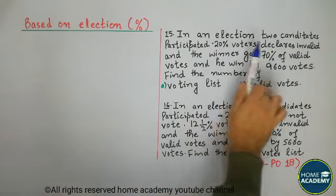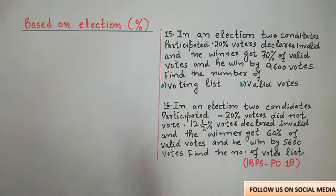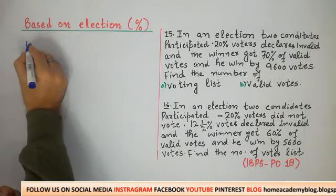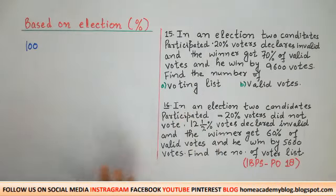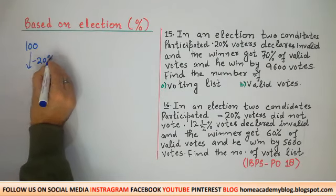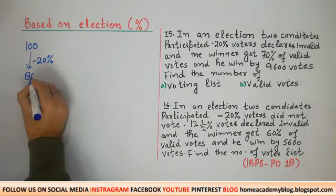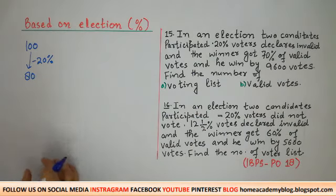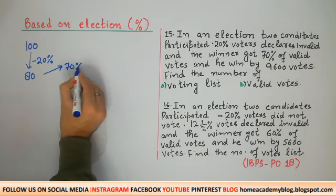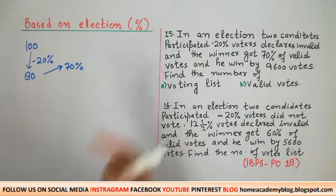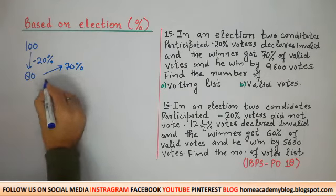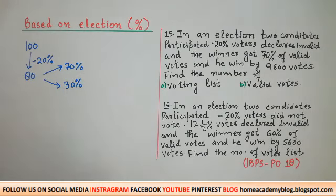Question number 15: In an election, two candidates participated. 20% voters declared invalid. The winner gets 70% of the valid votes and wins by 9,600 votes. If the winner gets 70% of the valid votes, then the loser gets 30% of the valid votes. The difference between winner and loser is 40% of the valid votes, and this difference equals 9,600 votes.